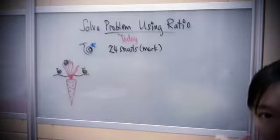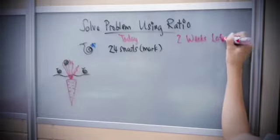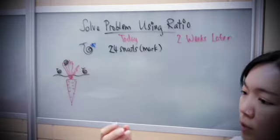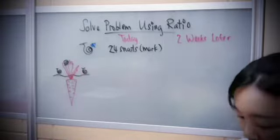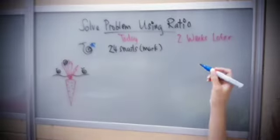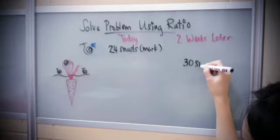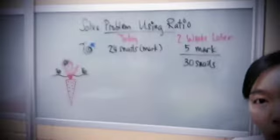Two weeks later, I come back to the farm and randomly pick 30 snails. I check all these snails — which ones have a mark and which ones don't. I separate the ones with a mark from the ones without. I found out that out of the 30 snails I randomly collected, there are five of them with a mark.